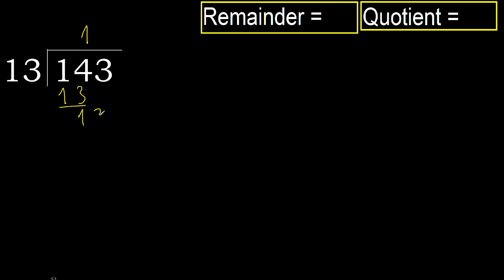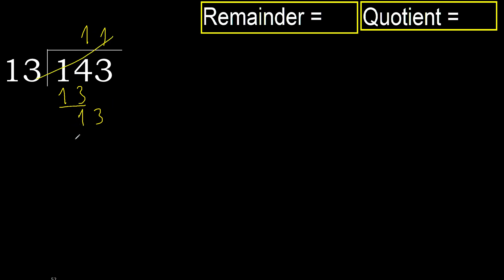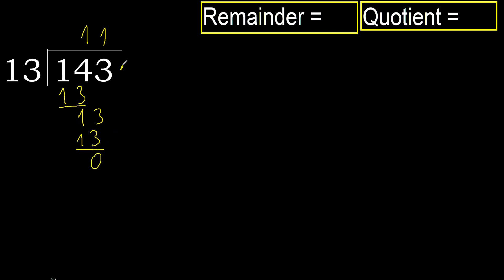Next, bring down 3. 13 multiplied by 1 is 13, which is not greater. Subtract. Next digit — that is not a number, therefore finish it.